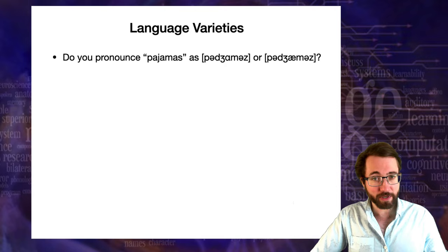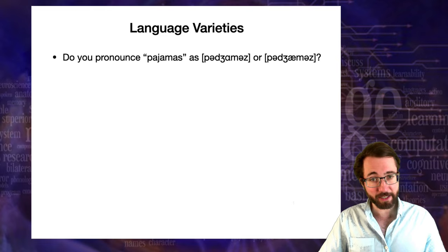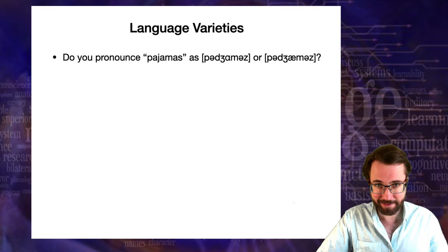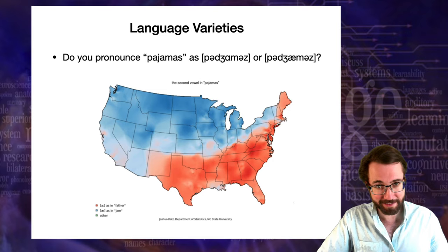Regional variation in English is not just about semantics — it's also about phonetics and phonology. How would you pronounce the word spelled P-A-J-A-M-A-S? Would you say pajamas or pajamas? In the blue regions, people say pajamas. In the red regions, pajamas. I grew up saying pajamas, so now you can figure out something about where I might be from.